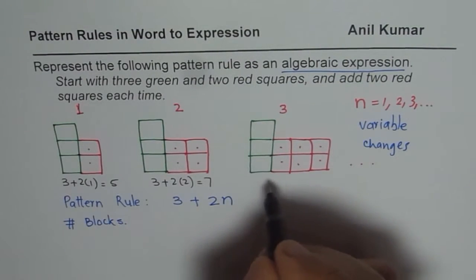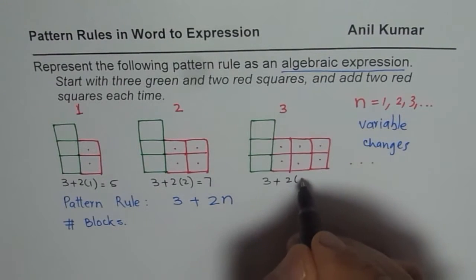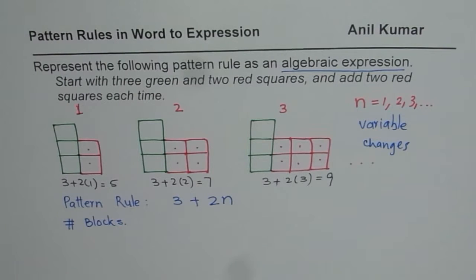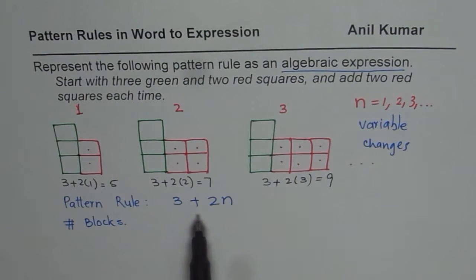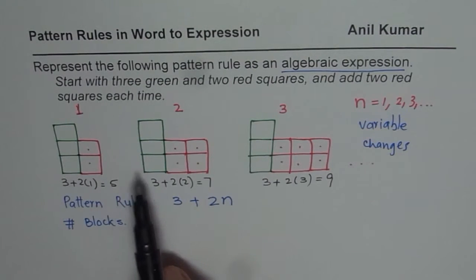In this case, it is 3 plus 2 times 3, right? 2 times 3 is 6, 6 plus 3 is 9. Do you see that? So this expression represents the number of blocks in each pattern.